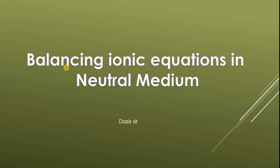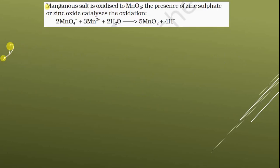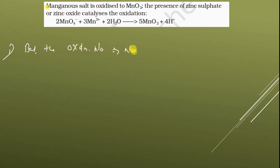Good evening guys. Today we shall see balancing ionic equations in neutral medium. The first point to keep in mind is to balance the oxidation number — that is, the number of electrons must be equal on both sides.